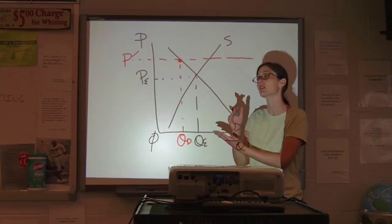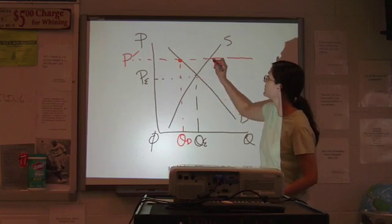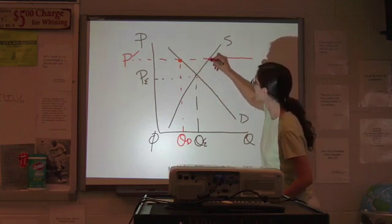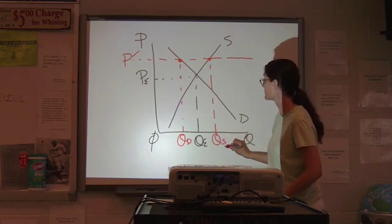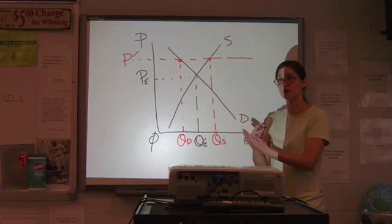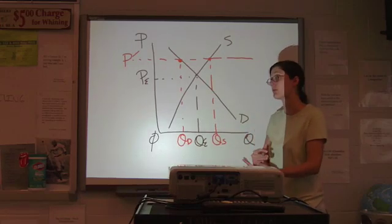Then you continue to go across until it intersects your supply curve. That's your quantity supplied, because every point on your supply curve represents a given quantity supplied at a given price.